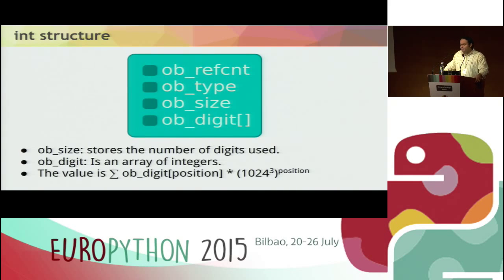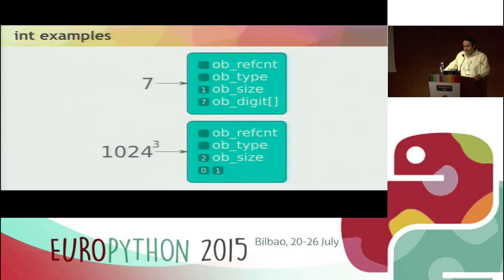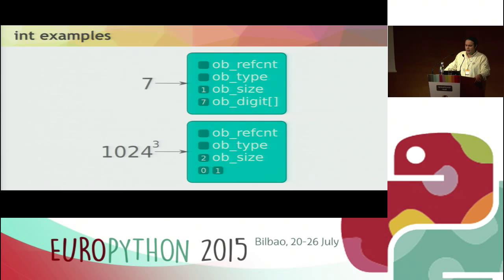The int object has four fields: the reference counter, ob_type, ob_size which is the size of the ob_digit array, and ob_digit which is an array of integers. The value of the int object is calculated with a formula. For example, the value 7 is stored as ob_size of 1 and ob_digit of 7. And 1024 has ob_size of 2, with the first ob_digit position holding 0 and the second holding 1. This structure allows arbitrary-length integers in Python.